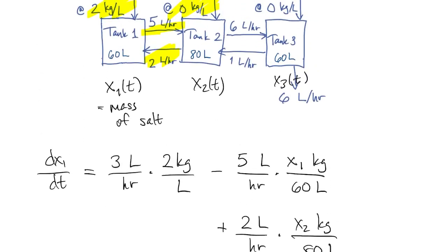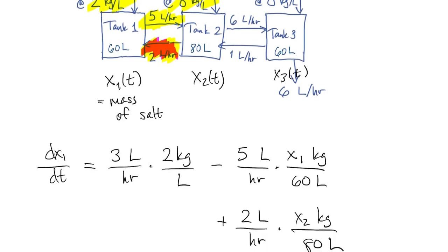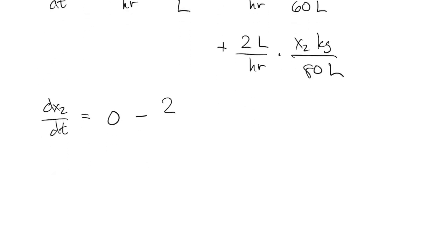Then we have to subtract what's being pumped from tank two to tank one. So we're losing two liters per hour at the concentration in tank two. And I'm just going to stop writing down the units since they're always the same.